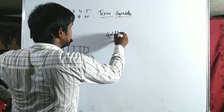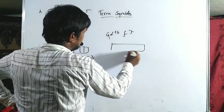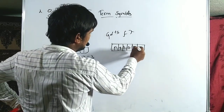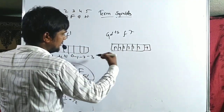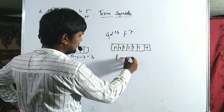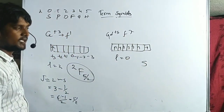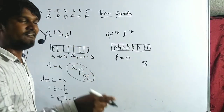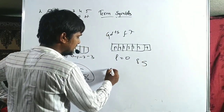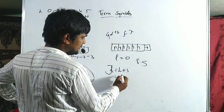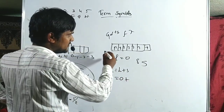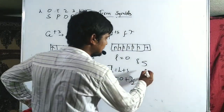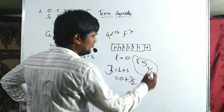For Gd3+ (F7 configuration): all seven ML values (+3,+2,+1,0,−1,−2,−3) cancel, so L = 0, term is S. All seven electrons are unpaired, multiplicity = 7+1 = 8. J = L+S = 0 + 7/2 = 7/2. The ground term symbol for Gd3+ is 8S(7/2).